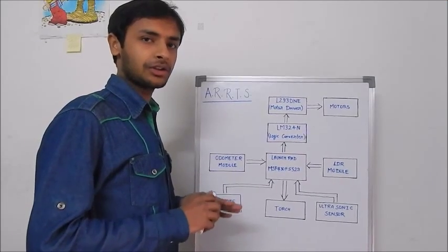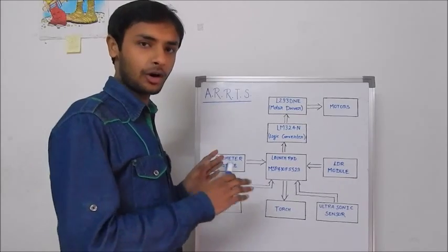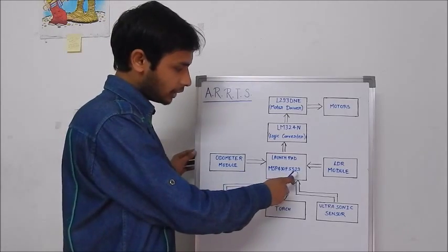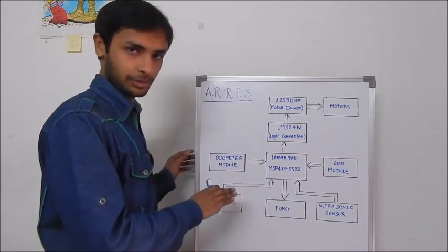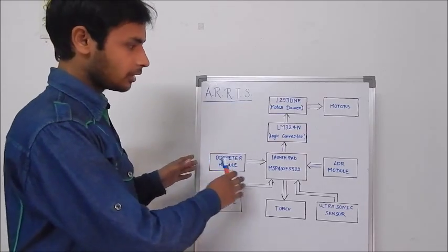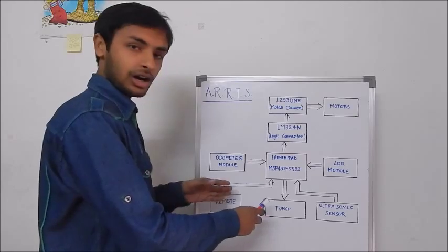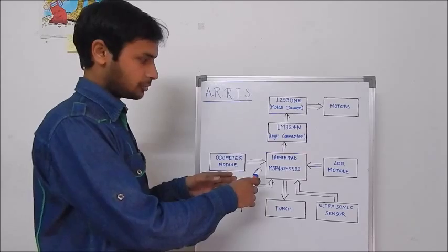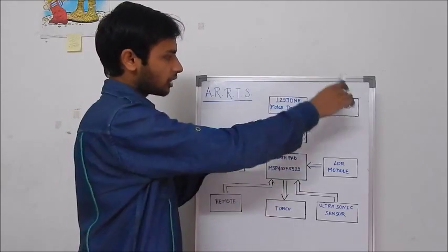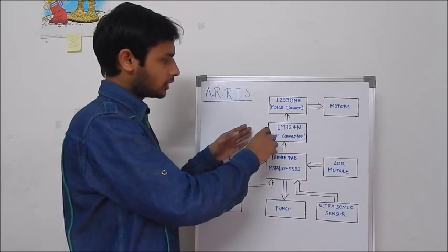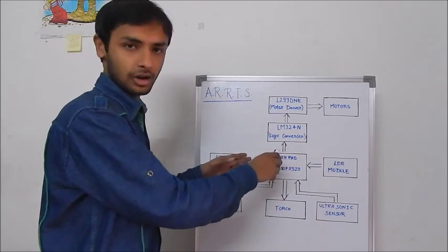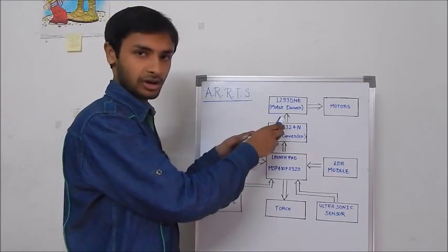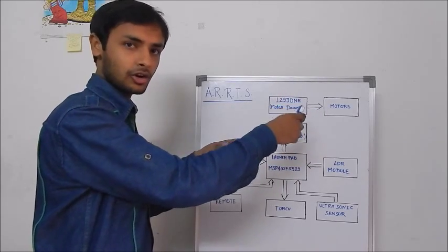Now I present the constructional details of ARTS in the form of block diagrams. As you can see, the Texas Instruments LaunchPad MSP430F5529 is the main controller of this prototype. We have included an odometer module, light dependent resistance module, LED torch, ultrasonic sensor, and a remote to control the LaunchPad. We have also included a motor controller — the Texas Instruments LM324N, which is a logic converter IC, and Texas Instruments L293D, which is a motor driver that controls the motor and the direction of the bot.